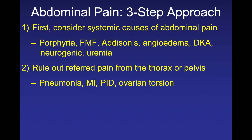Always remember referred pain — pain in the abdomen can come from the thorax and the pelvis. Basilar pneumonia is a common cause of upper quadrant pain, because pleural inflammation can rub against the liver or splenic capsule to refer pain to the right or left upper quadrant. A febrile patient with cough and right upper quadrant pain should raise pulmonary causes. Never forget myocardial infarction, especially in elderly or diabetic patients with abdominal pain without a clear cause. In women, also consider pelvic inflammatory disease and ovarian torsion.